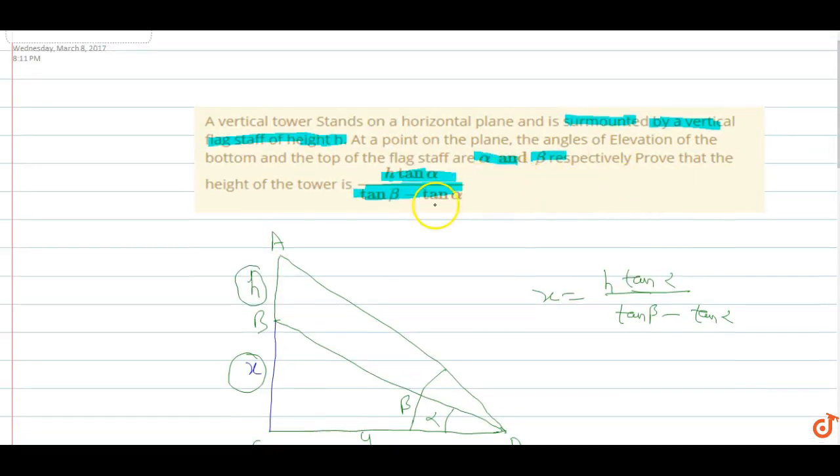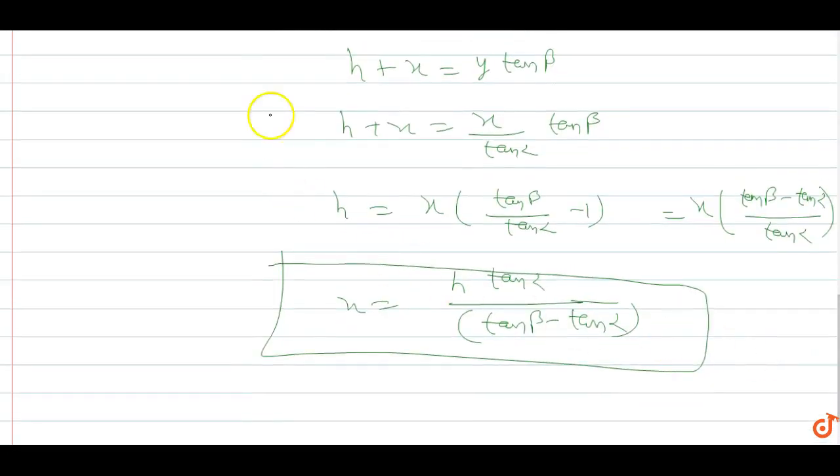We have proved that the height of the tower is h tan alpha upon tan beta minus tan alpha. This completes the proof for this question.